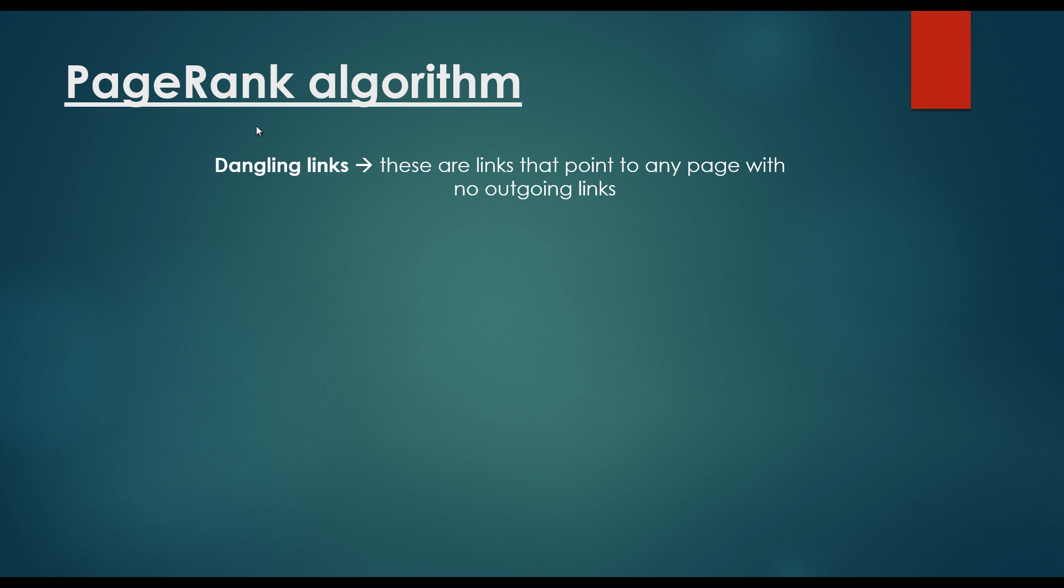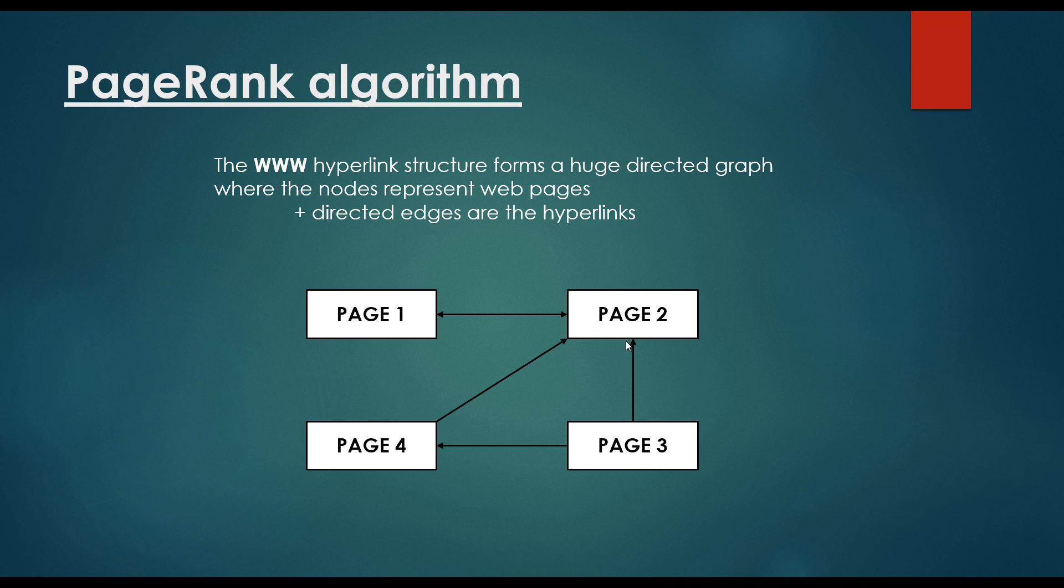And we have dangling links. These are links that point to any page with no outgoing links at all. So for example, as far as page 2 is concerned, it has an outgoing link pointing to page 1, and it has several incoming or inbound links. Page 1 is pointing to page 2. Page 4 is pointing to page 2. Page 3 is pointing to page 2.